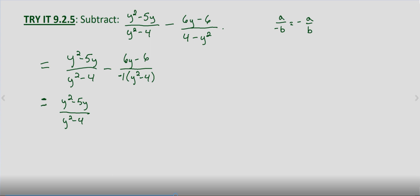And what that means is that we have minus a negative, which just becomes plus a positive. So we have plus six y minus six over y squared minus four. And now we can just combine the numerators because we have like denominators. So y squared minus five y plus six y minus six, and that's all over y squared minus four.